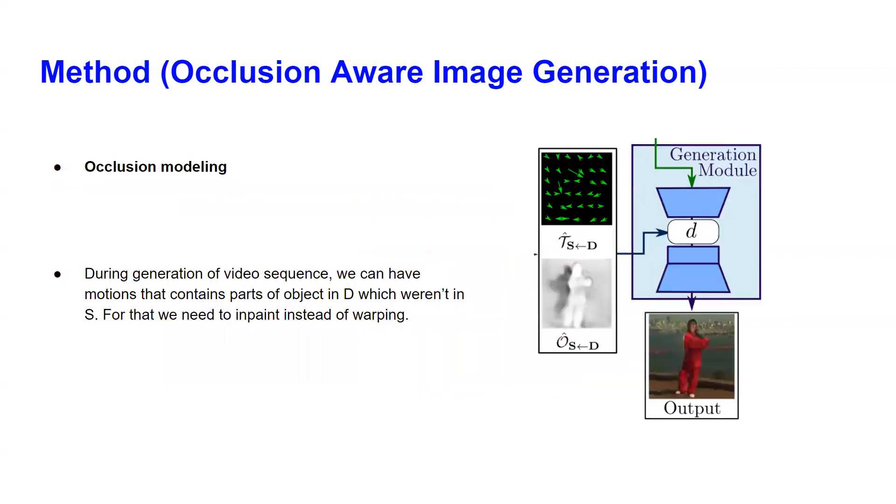They call it occlusion aware image generation. To sum up, during generation of a video sequence, we can have motions that contain parts of object in G which weren't in S. For that we need inpainting instead of warping. The occlusion map just tells the module when to use warping and when to do inpainting.